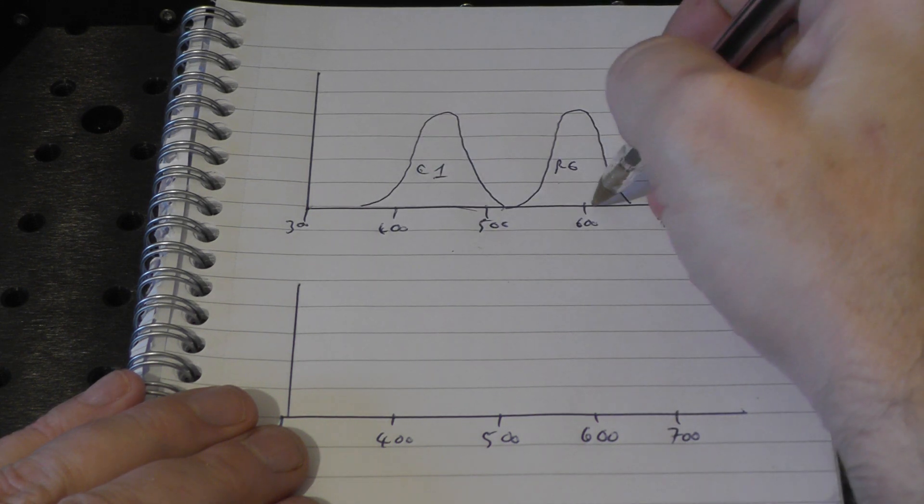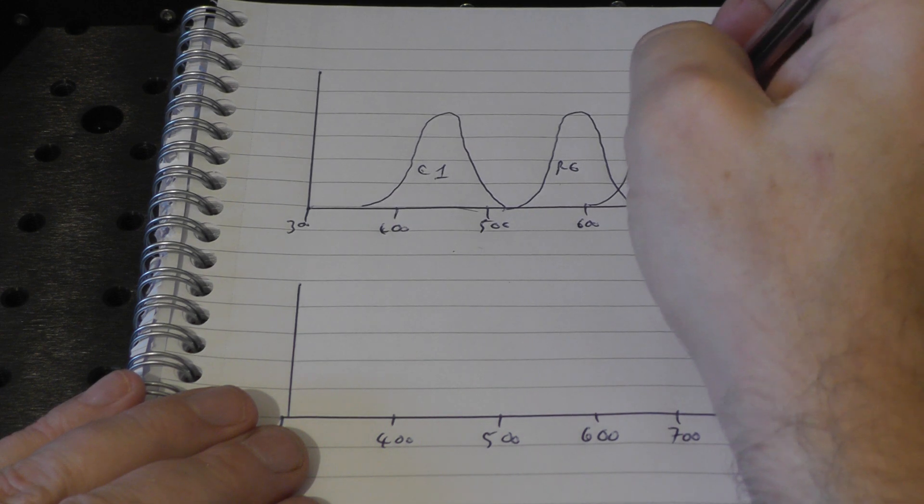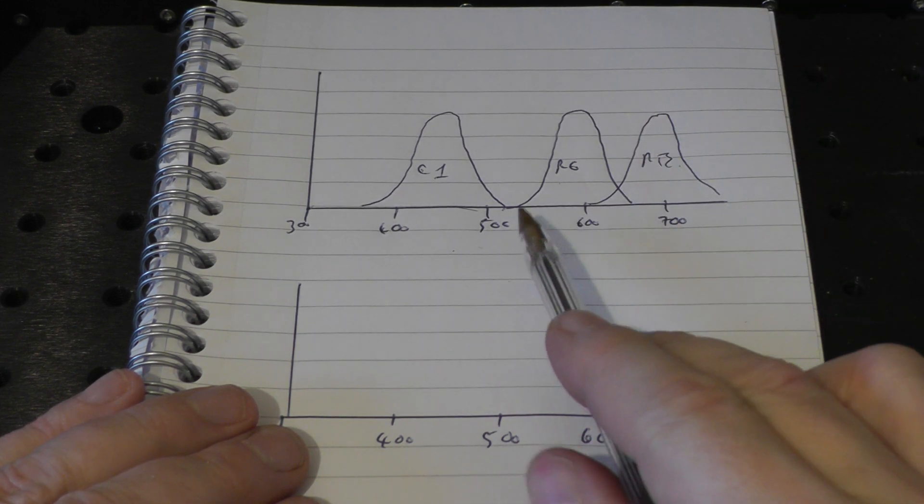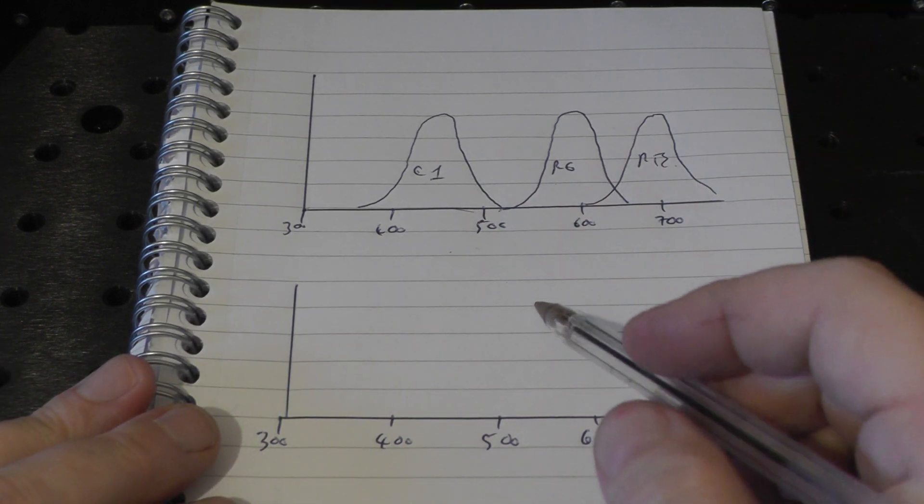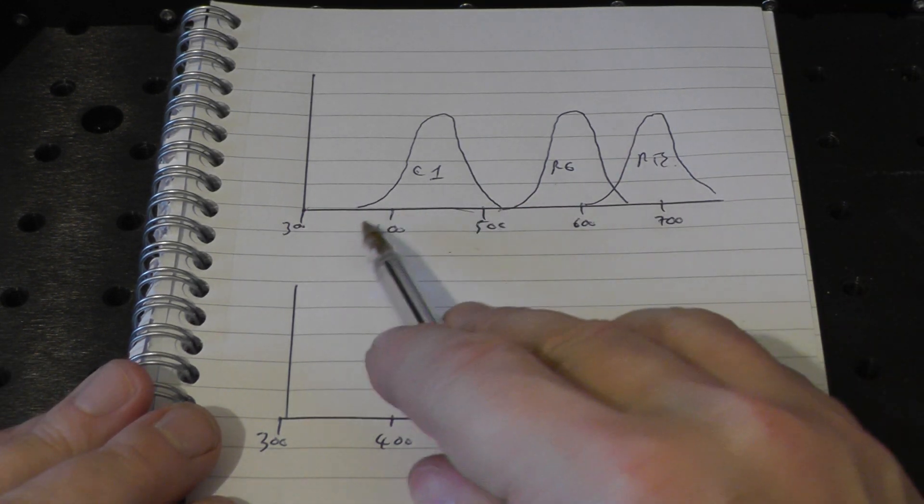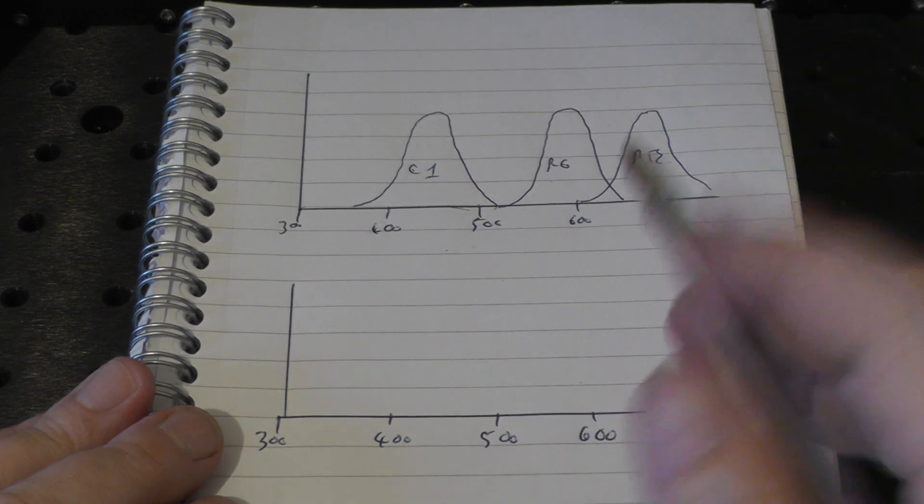And then Rhodamine B will emit somewhere in the red and it looks at first glance like we could simply mix these three dyes and put them in a cuvette and we'd have a white light output that would be able to tune almost continuously from 400 nanometers all the way through to like 700 nanometers.